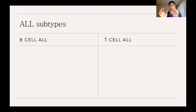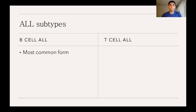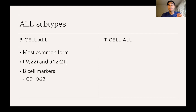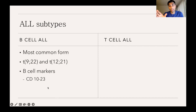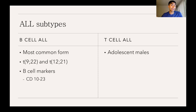Since lymphocytes can develop into B cells or T cells, we further classify lymphoid leukemias into B cell type or T cell type. B cell ALL is the most common form of ALL. It's characterized by translocation between chromosomes 9 and 22, and 12 and 21. These cells have B cell markers — specifically CD markers, which are proteins on the cell surface signaling cell interactions — with B cell markers ranging from roughly CD10 up to CD23.